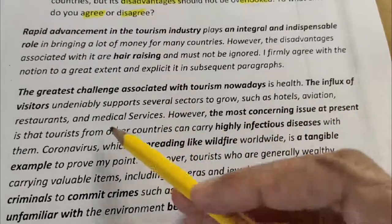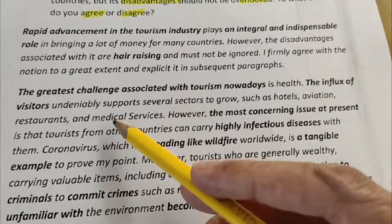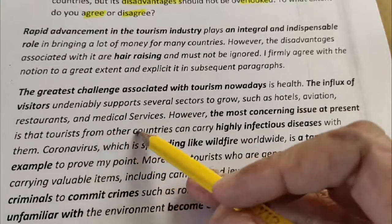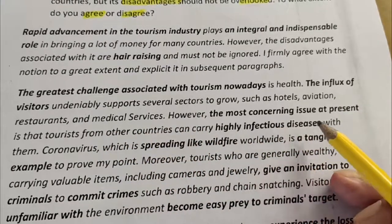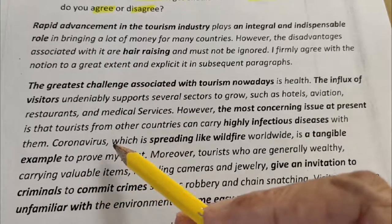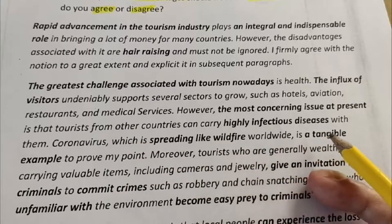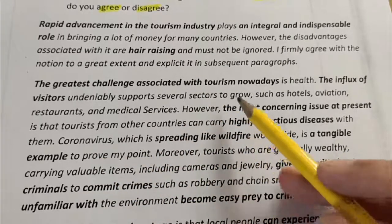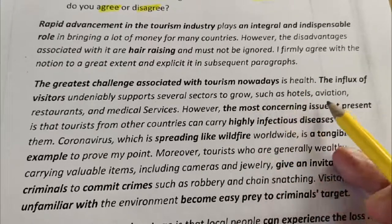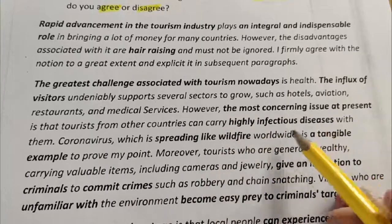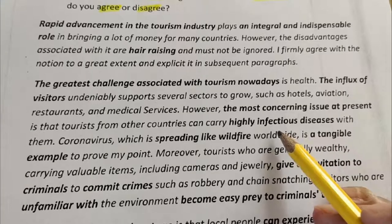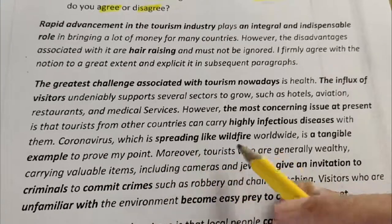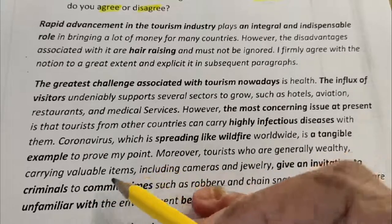The influx of visitors — a very nice phrase meaning the coming of a lot of visitors — undeniably spurs several sectors to grow, such as hotel, aviation, restaurant, and medical services. However, the most concerning issue at present is that tourists from other countries can carry highly infectious diseases. 'Infectious' also means contagious — diseases which spread very fast. And coronavirus, which is spreading like wildfire — an idiomatic phrase meaning spreading very fast — worldwide is a tangible example to prove my point. 'Tangible example' means it is very easy to see, a very clear, good example.